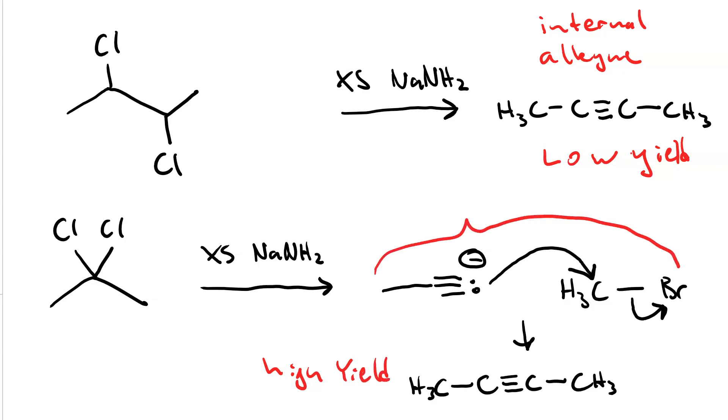This process where we react an alkynide ion with an alkyl halide is called alkylation. And it's very exciting because it allows you to increase the carbon-carbon skeleton. Our initial material had three carbon atoms.